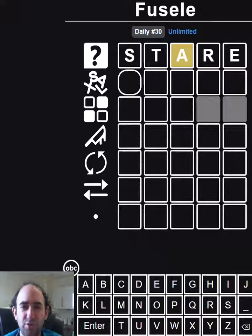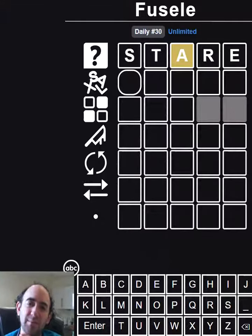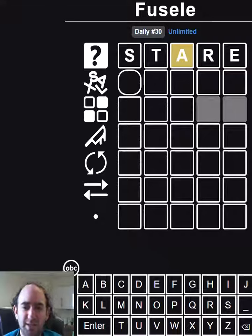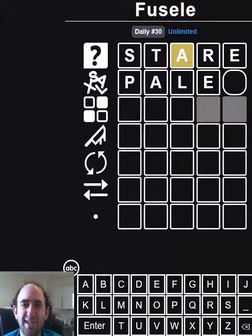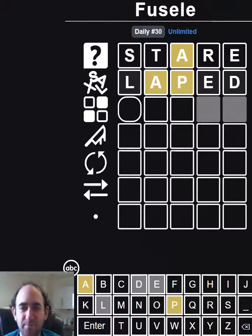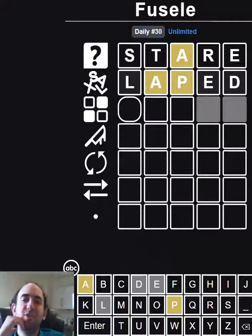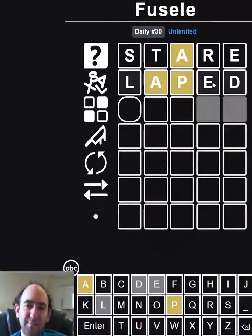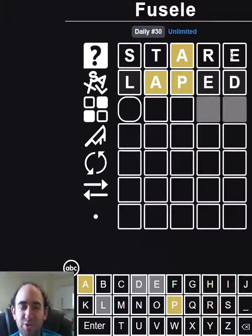So let's try pailed. Oh that is actually a word isn't it? So let's try leaped because that's not a word. Right so we do still have a grey E. So there definitely isn't an E. So that was true from row one.